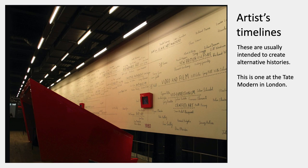There are also timelines made by artists — some as artworks, some to create alternative histories. There was one traveling internationally a few years ago. I saw it in Singapore where at every stop it was redone on the walls of a gallery and people would add their own ideas to what should be on the art history timeline. This one was at the Tate Modern in London — the idea was to create alternative histories, alternative narratives that you wouldn't find in textbooks.